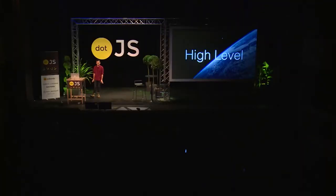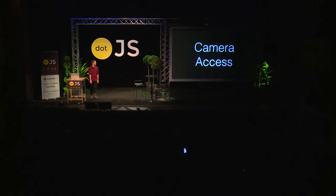But before we get into all that, just to make sure we're all on the same page, let's see what the APIs we're actually talking about are. First off, it's not really a video call if we don't have access to the person's camera, so we've got to get that. The API for this is getUserMedia — you've probably seen this before, it's in every cool demo on CodePen.